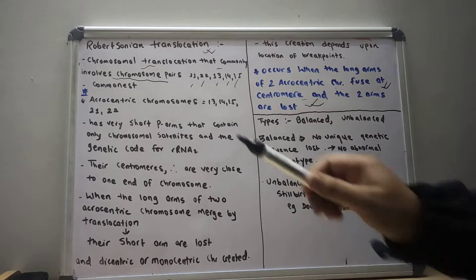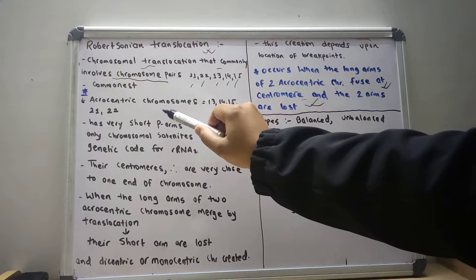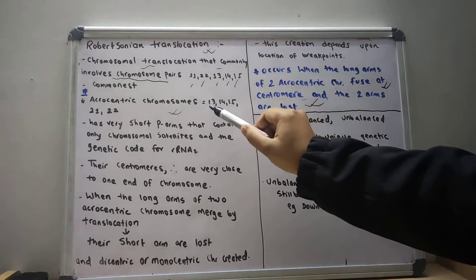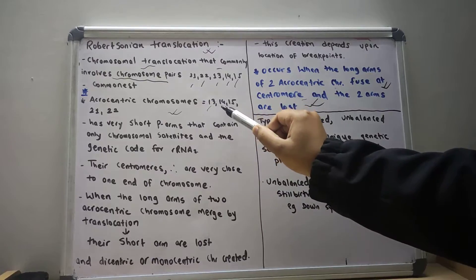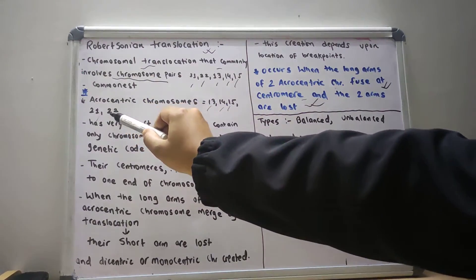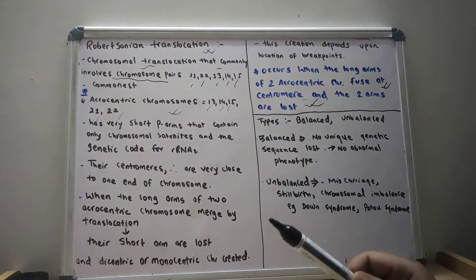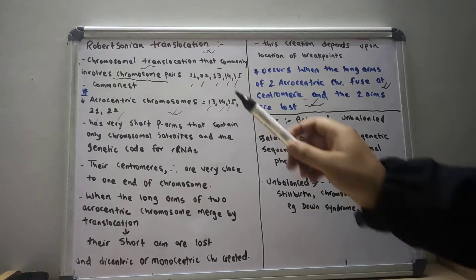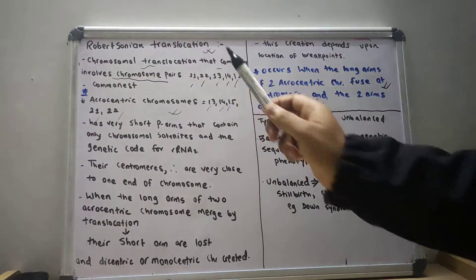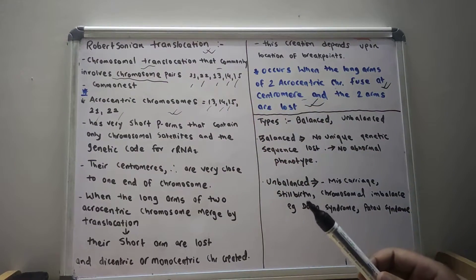First of all, we have to know that the acrocentric chromosomes are chromosome number 13, 14, 15, 21, and 22. For your remembrance, you can also use the order 21, 22, 13, 14, 15.